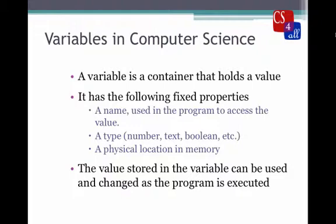In computer science, a variable is a container or a storage location that holds a value. This variable has the following fixed properties. It has a name which is used by the program to access the value.